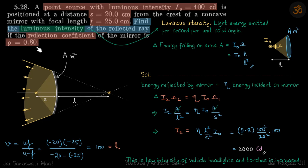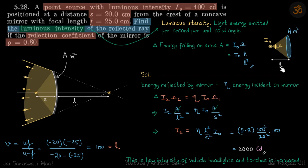20% of the light is being absorbed by the mirror. Luminous intensity is defined as light energy emitted per second per unit solid angle. Solid angle is defined as follows: suppose you have a small area A at a distance l — this area represents the part of the sphere subtending angle omega at the center. Then omega is defined as A divided by l squared.